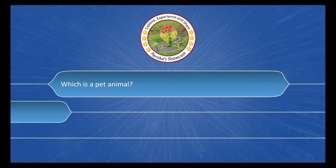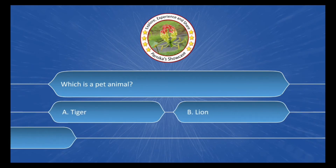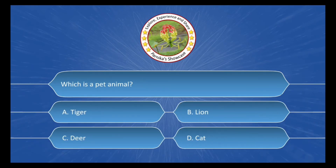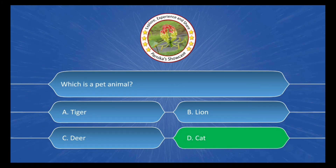Next question is: which is a pet animal, and the options are: A. Tiger, B. Lion, C. Deer, D. Cat. And the correct answer is option D. Cat.